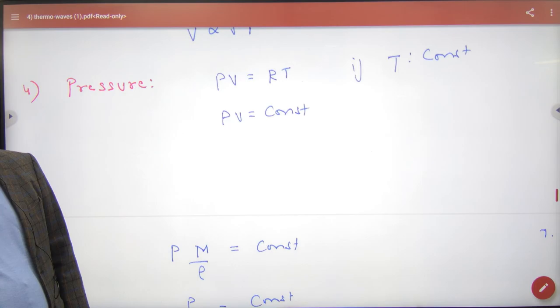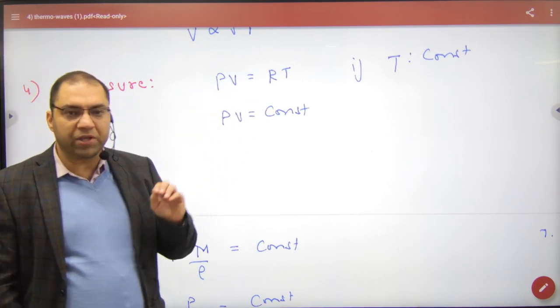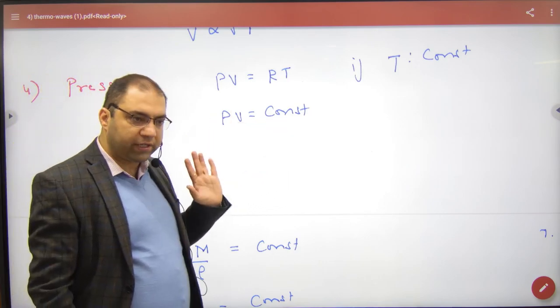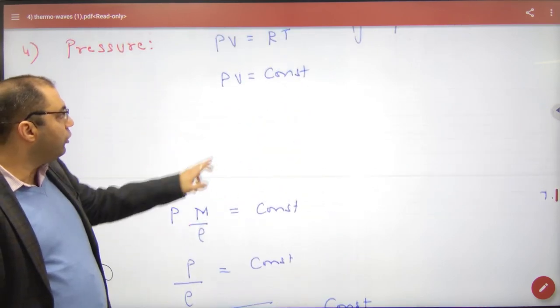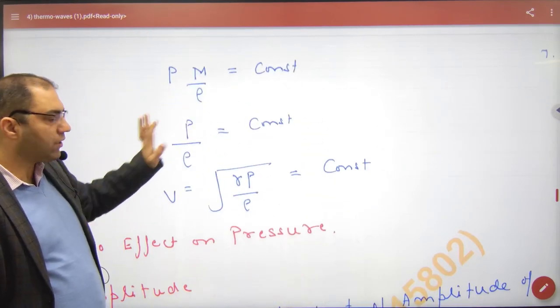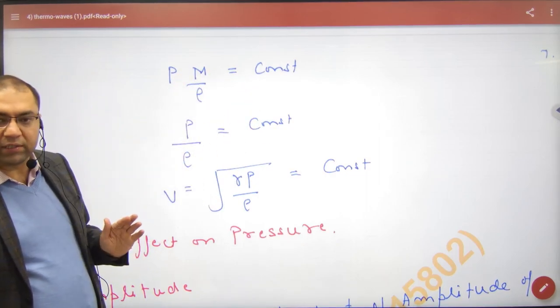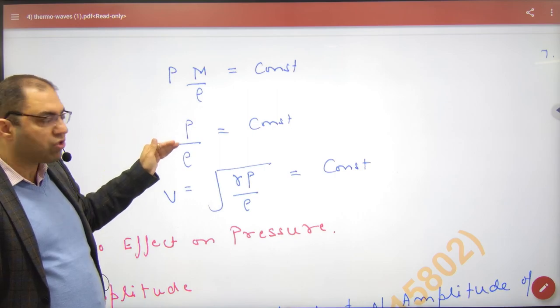Next step, pressure. PV equals RT. For pressure's effect, temperature must be kept constant. So PV equals constant. Here, for volume we put mass by density. Mass comes down, again constant. So remember, the ratio of pressure and density is constant.